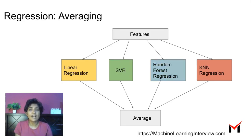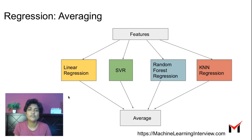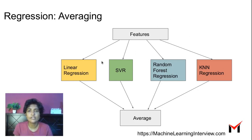So what if we have a regression problem? We can easily extend this by averaging. We train four different regression models on the training data, and given a new point, we take the output from each model and average them to produce the final prediction.